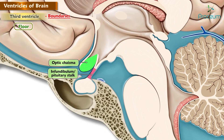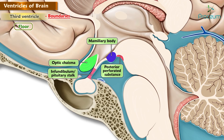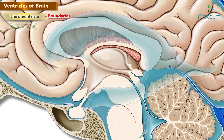The floor is composed of the optic chiasma, infundibulum or pituitary stalk, the mammillary body, posterior perforated substance, tegmentum of the midbrain, and the tuber cinereum. The lateral wall is made up of two-thirds of the medial surface of the anterior part of the thalamus.